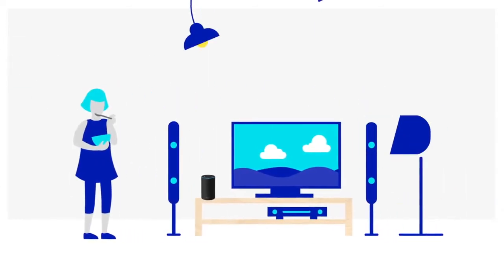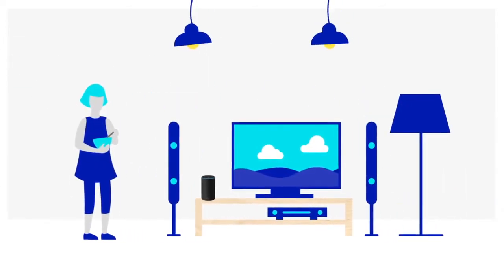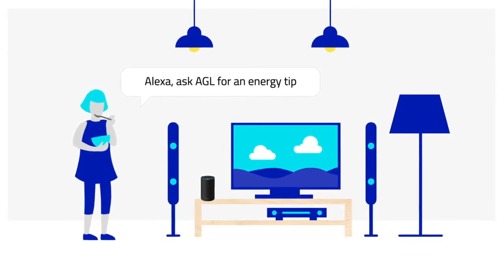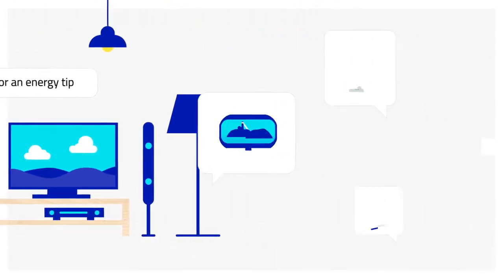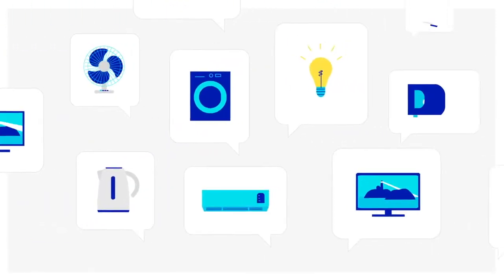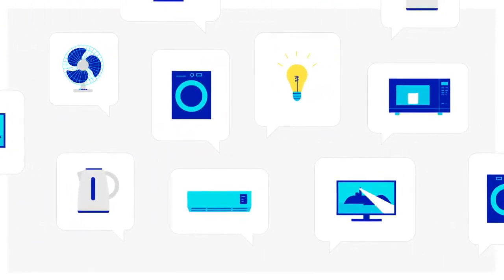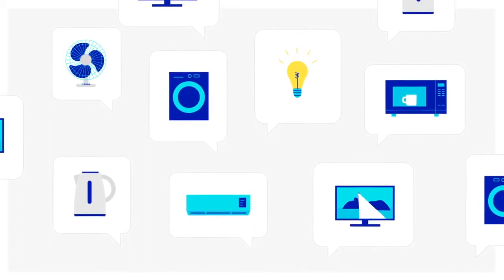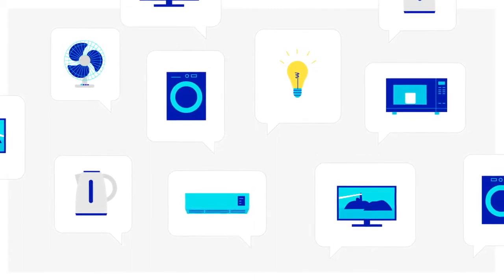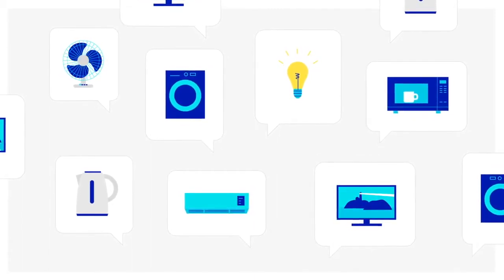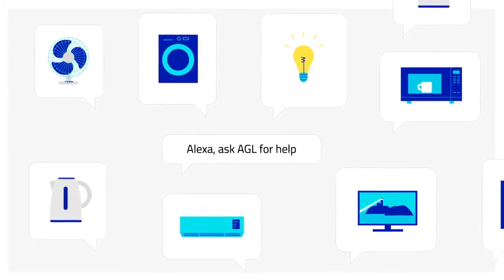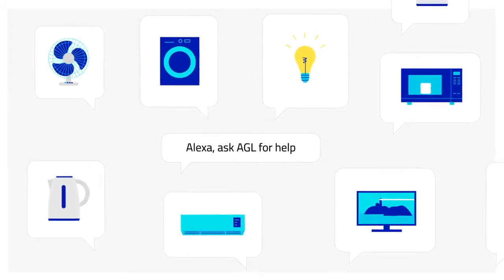Or wondering how you can save on energy? Say, 'Alexa, ask AGL for an energy tip.' There are over 70 energy saving tips for around the home. And if you're ever stuck on what to ask or how to ask it, simply say, 'Alexa, ask AGL for help.'